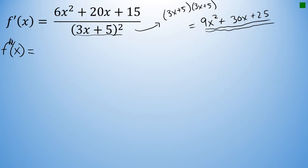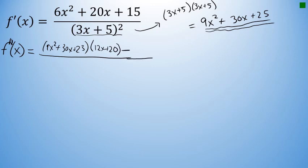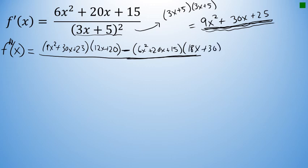The second derivative is the derivative of (6x² + 20x + 15) / (3x + 5)². It equals the denominator unchanged — using 9x² + 30x + 25 — times the derivative of the numerator, which is (12x + 20). Minus the numerator unchanged, (6x² + 20x + 15), times the derivative of the denominator. Taking the derivative of the polynomial form 9x² + 30x + 25, the derivative of the denominator is 18x + 30. This is all over the square of the denominator, which is (3x + 5)² squared, or (3x + 5)⁴.